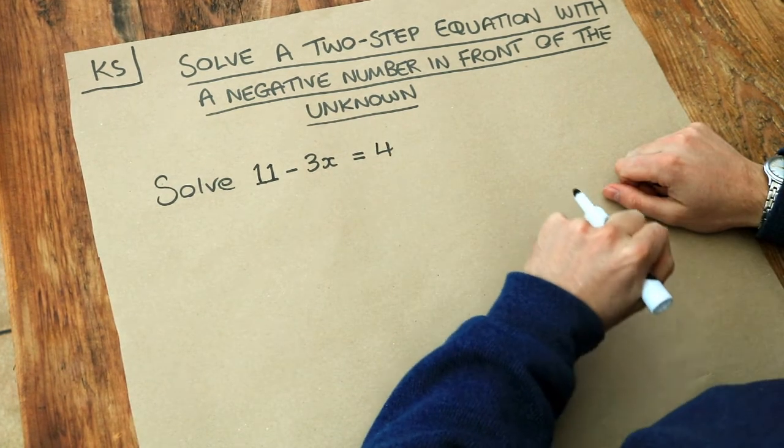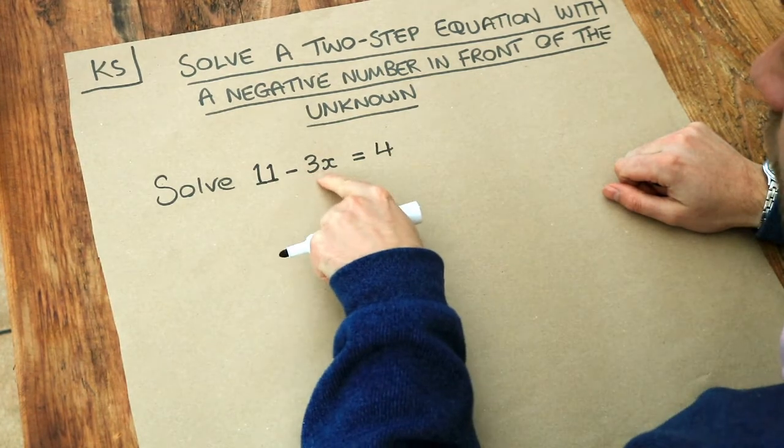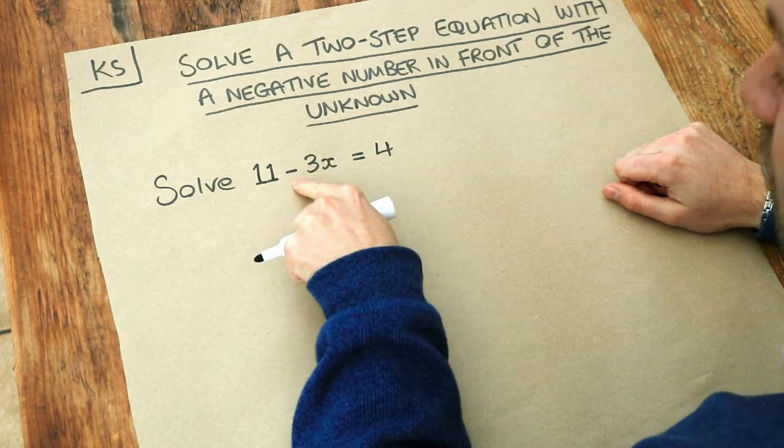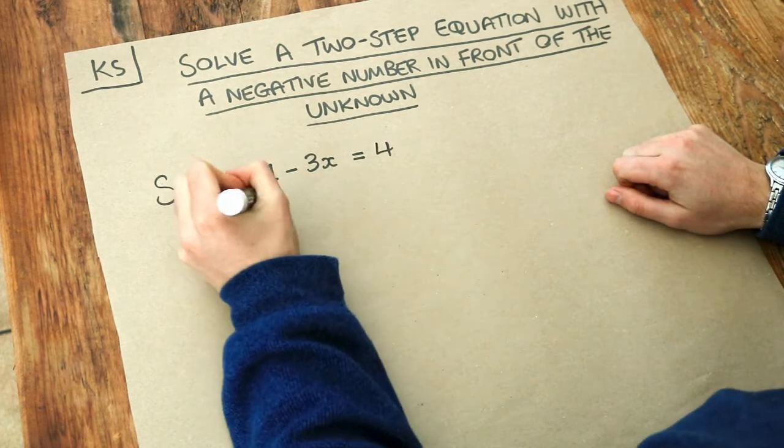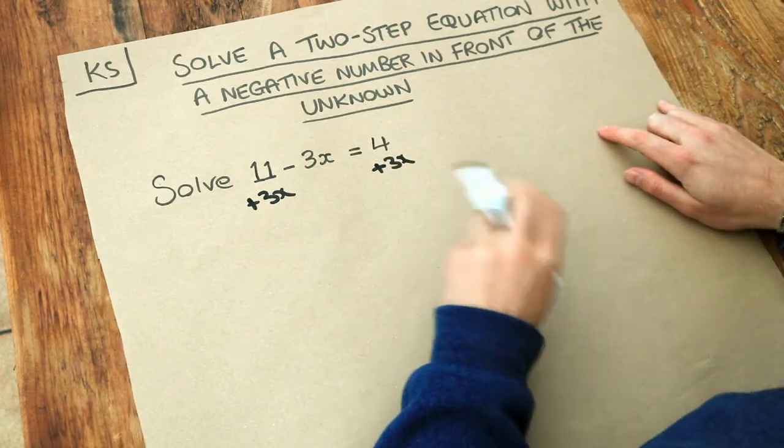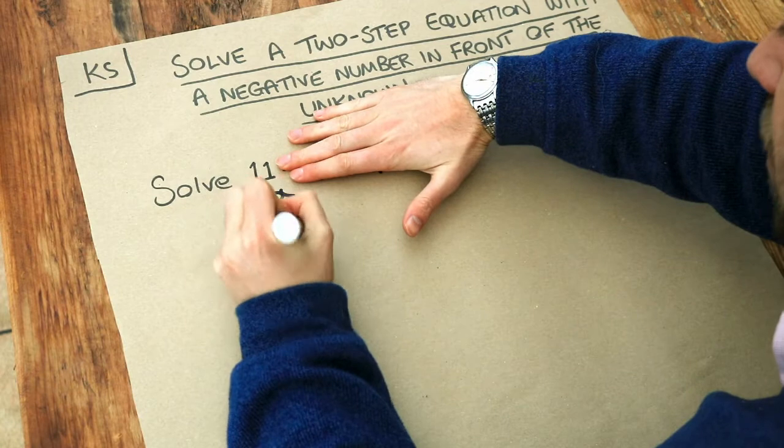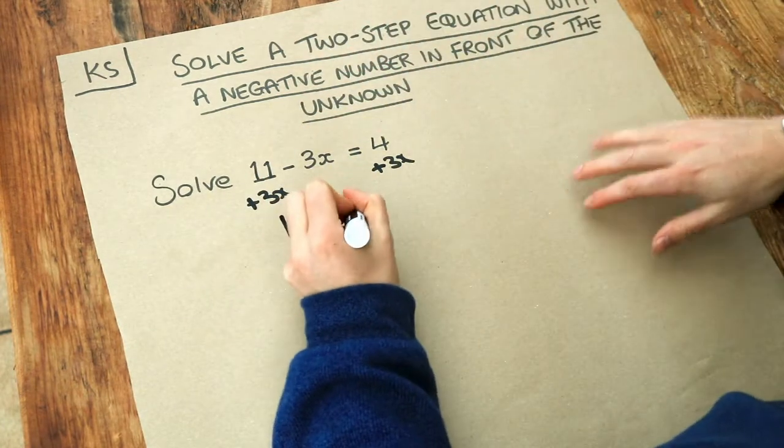Now generally I like to make sure the x is on the side where it's positive, so if we don't want this x to be a negative term, we don't want to be minus 3x, we could add 3x to both sides of the equation first. And if we do that, well the left-hand side, we've added 3x, so that just becomes 11, because the plus 3x cancels the minus 3x.